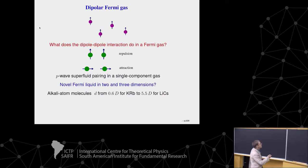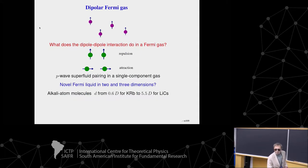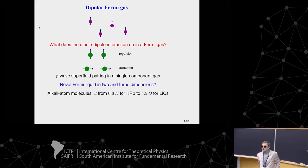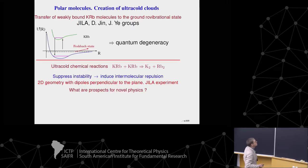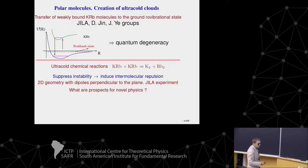I will also talk about P-wave superfluid pairing in a single-component Fermi gas, then about novel Fermi liquid. I simply remind you that the dipole moment of realistic polar molecules — these are polar molecules of alkaline atoms — ranges from 0.6 Debye to almost 6 Debye. You should divide by 2.4 to get atomic units: electron charge multiplied by Bohr radius.